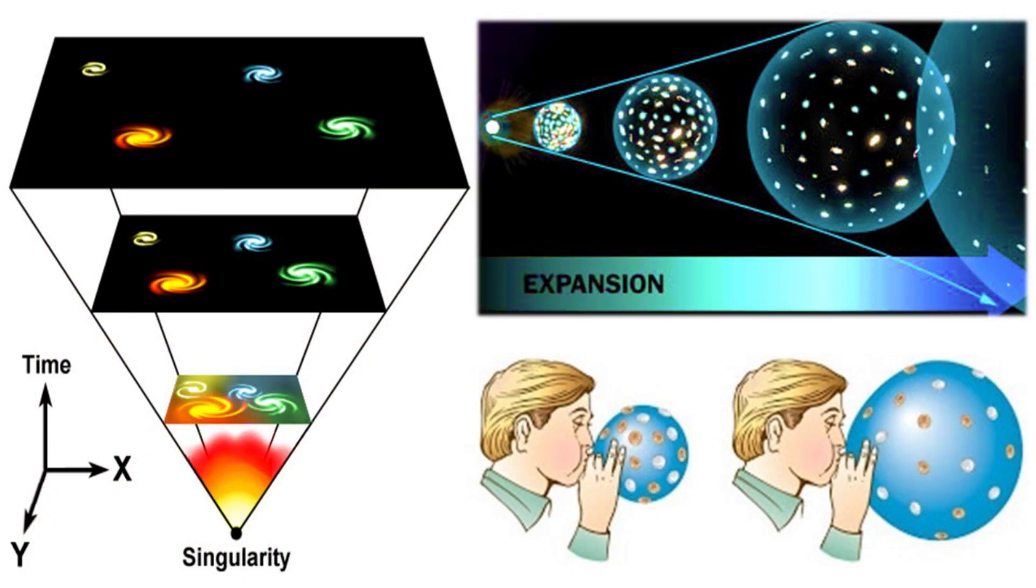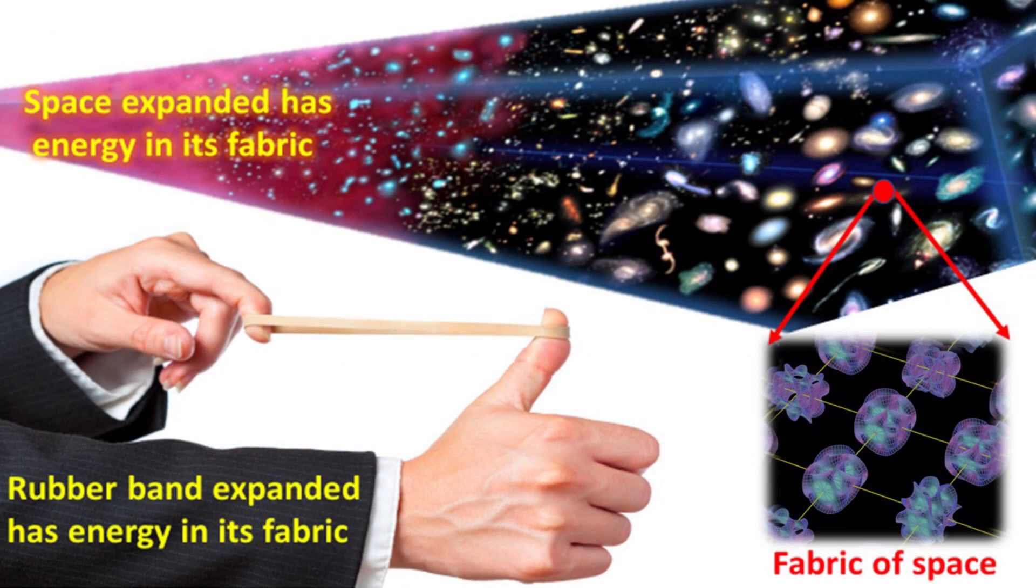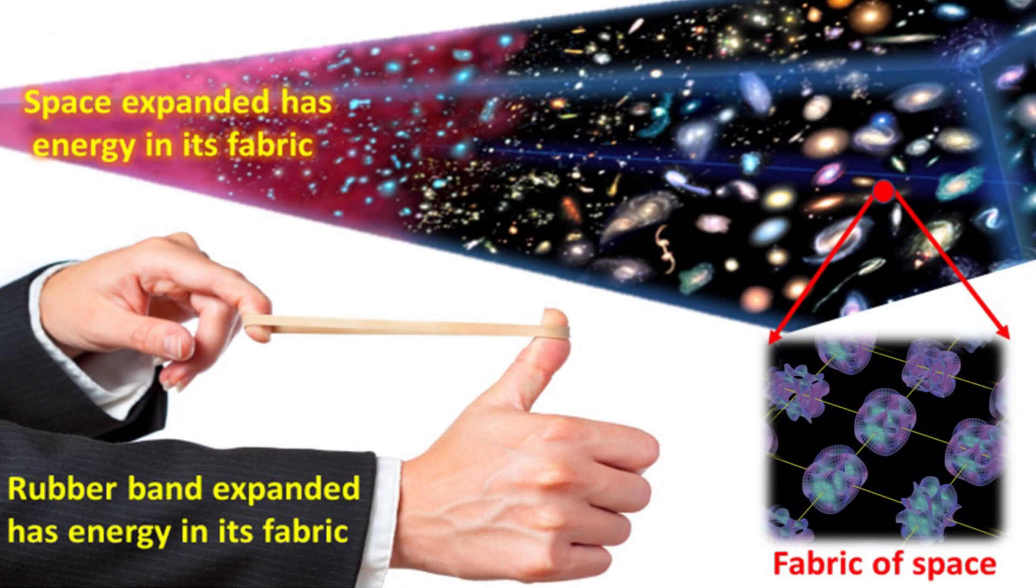Science agrees that the heavens were indeed stretched out after the singularity at the beginning, the bottom left. As the fabric of space was stretched out, the galaxies became farther apart, as in the top left and top right diagrams. The stretching of the heavens was like inflating a balloon, bottom right. As the stretching went on, the energy in the fabric of the balloon built up. An expanded rubber band also has energy in its fabric. Likewise, space expanded has energy in its fabric too. As the expansion went on, the energy built up.